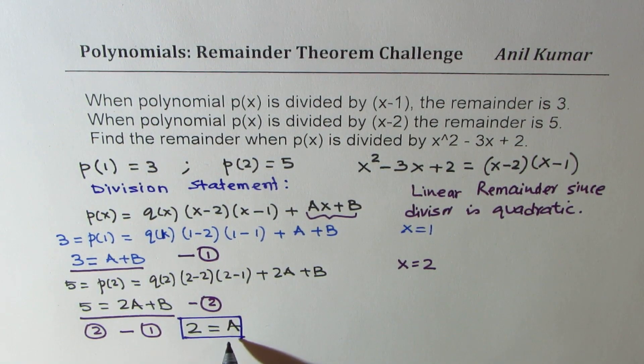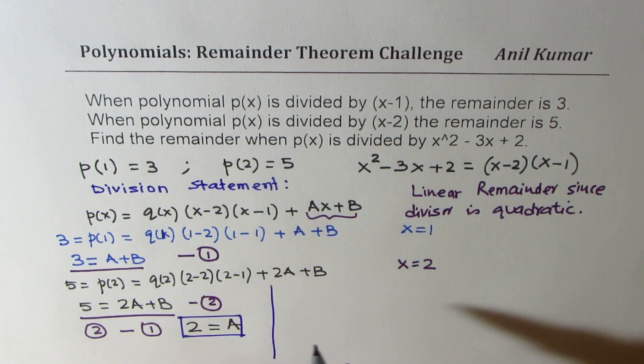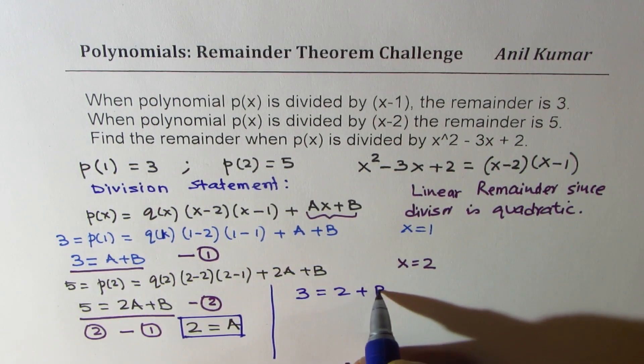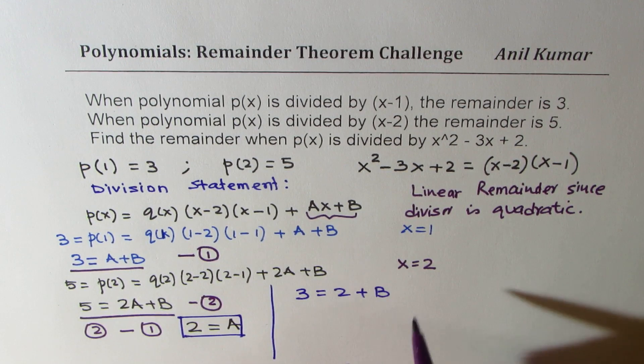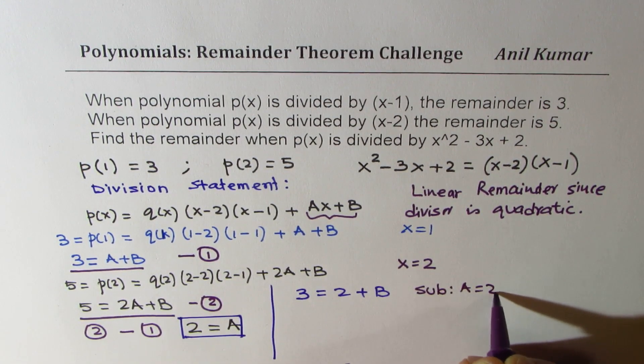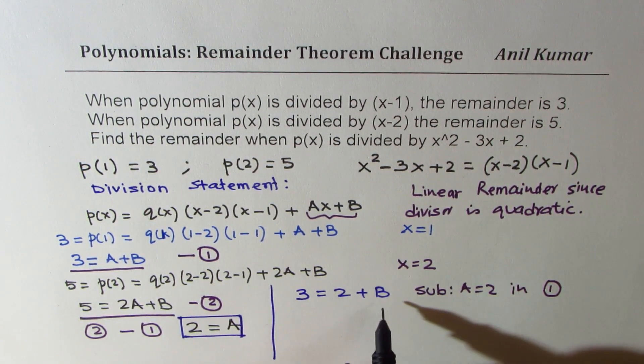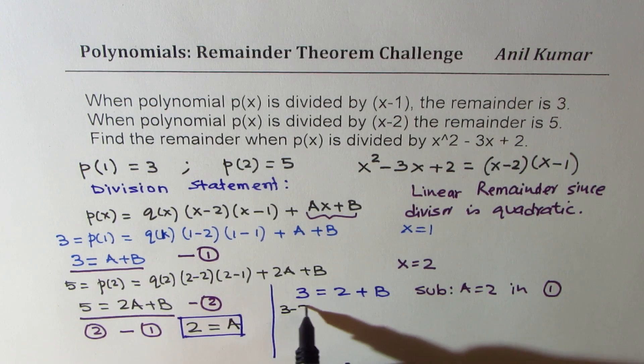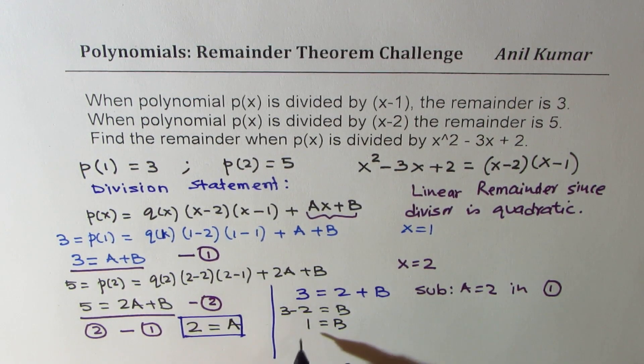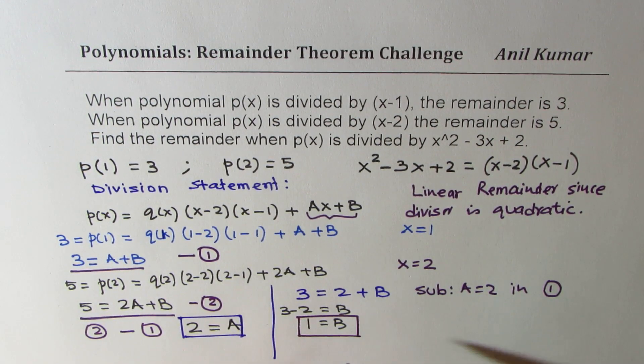Once you get the value of A, then what we can do is just substitute the value of A in equation 1. So we could write 3 = 2 + B. So what we did here was substitute A = 2 in equation 1. So if you do that, you get the value of B as 3 - 2 = B, or B = 1. So we get B = 1 and A = 2.